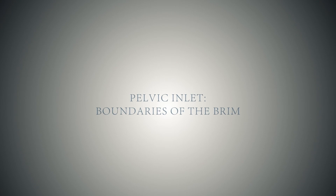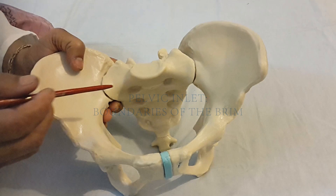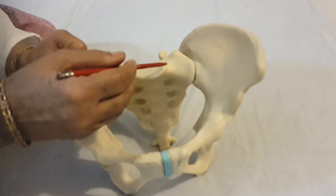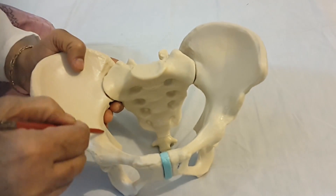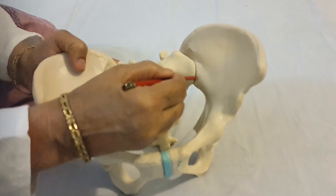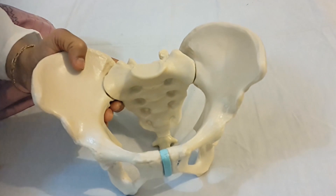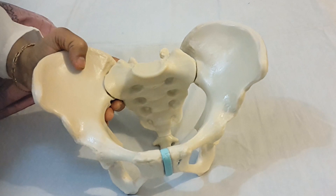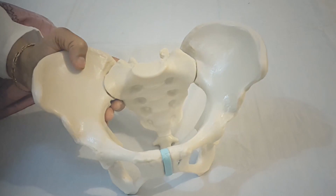Pelvic inlet — boundaries of the brim. The boundaries of the pelvic brim or inlet include: sacral promontory, sacral ala, sacroiliac joints, iliopectineal lines, iliopectineal eminence, upper border of superior pubic ramus, pubic tubercles, pubic crest, and upper borders of the pubic symphysis.